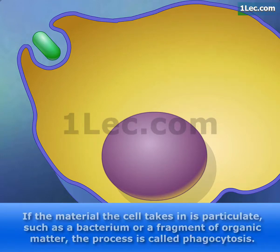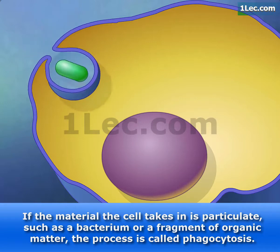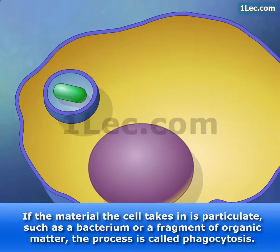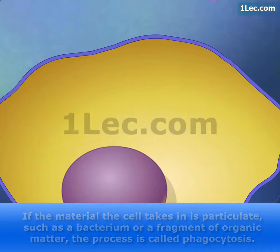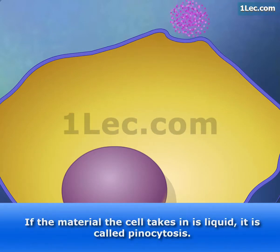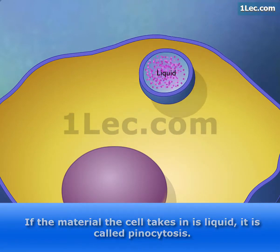If the material the cell takes in is particulate, such as a bacterium or a fragment of organic matter, the process is called phagocytosis. If the material the cell takes in is liquid, it is called pinocytosis.